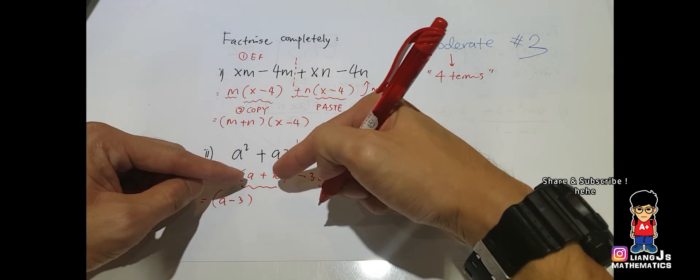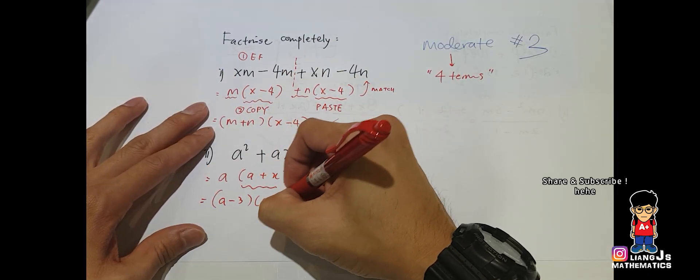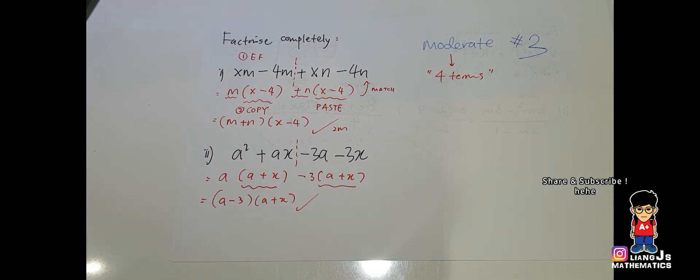Then the next one: a plus x, a plus x, put it outside and done. That's your answer, two marks. That is skill as well.